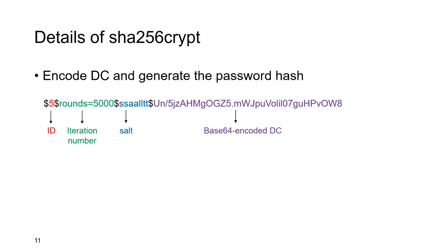The last step is to generate the password hash. This is an example of an SHA-256-crypt hashed password. There are four segments separated by the '$' character. The first segment is the ID — for SHA-256-crypt it is 5. The second segment is the total number of iterations, with a default value of 5000. The third part is the salt string, and the last part is the base64-encoded digest C. As this step can be easily reversed, it will not be implemented in the accelerator.